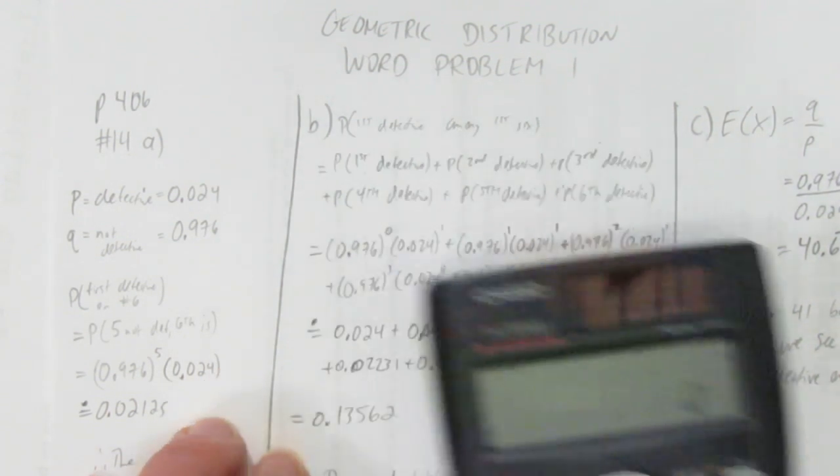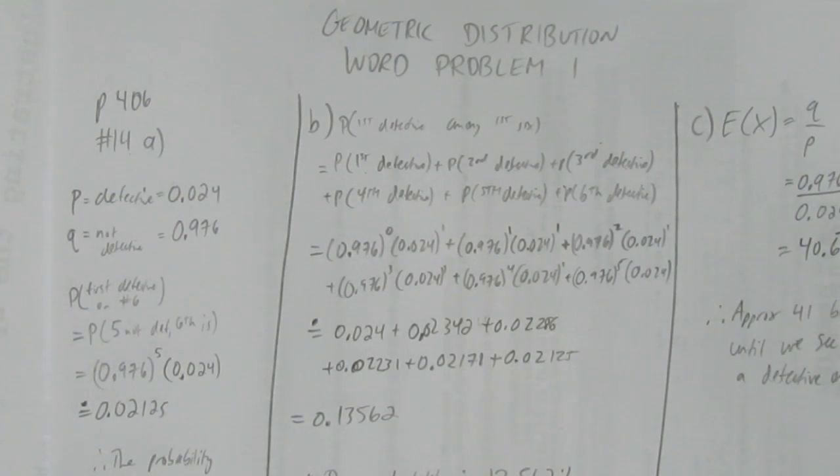And so, these three parts were an example of a geometric distribution word problem.